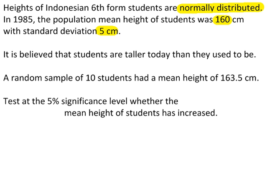A random sample is taken of 10 students and the sample mean is 163.5 cm. So 163.5 will become our test value. We're going to test at the 5% level of significance whether the mean height of students has increased. So a one-tailed test.